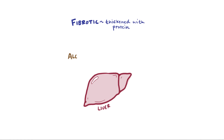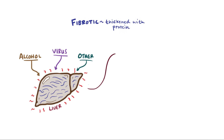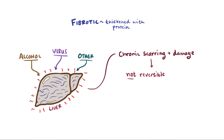So when your liver is constantly forced to process alcohol, like in alcoholic liver disease, or subject to a viral attack for a long time, like HBV, or anything else that causes a long-term or chronic state of liver cell or hepatocyte destruction and inflammation, your liver can become seriously scarred and damaged to the point where it's no longer reversible, at which point it becomes fibrotic, and in the liver we call this process cirrhosis.